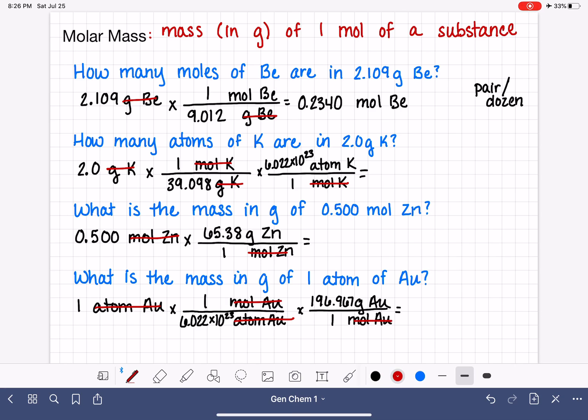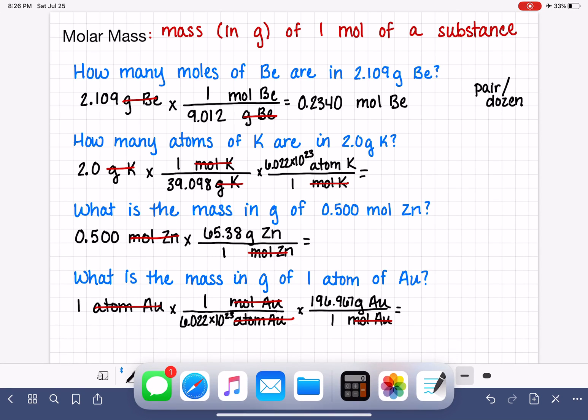That means 196.967 grams per mole. In that step, we cancel out the mole units. And we're ready to do the math on all three of these problems.